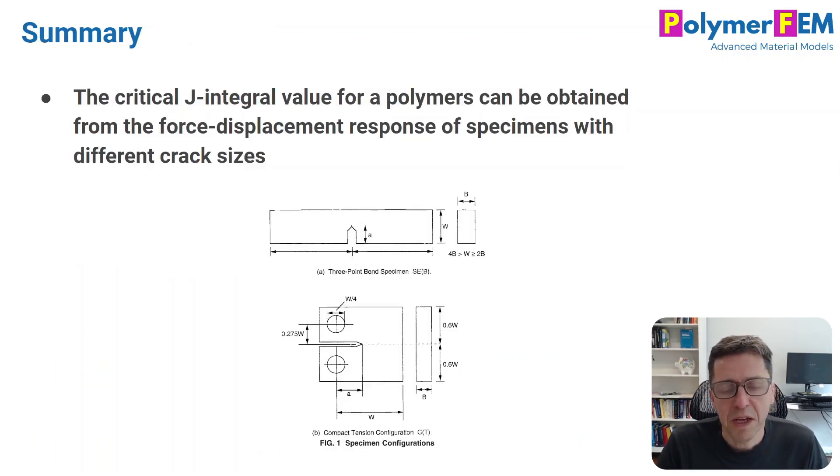To summarize, it is very possible - in fact, it's not that hard - to experimentally measure the J-integral, the critical value, and the resistance curves from experiments on standardized test specimens. The ASTM standard has two very specific geometries they recommend. You can see them in the figure here. And that's how people typically do it experimentally. If you have any questions, you can ask them below.